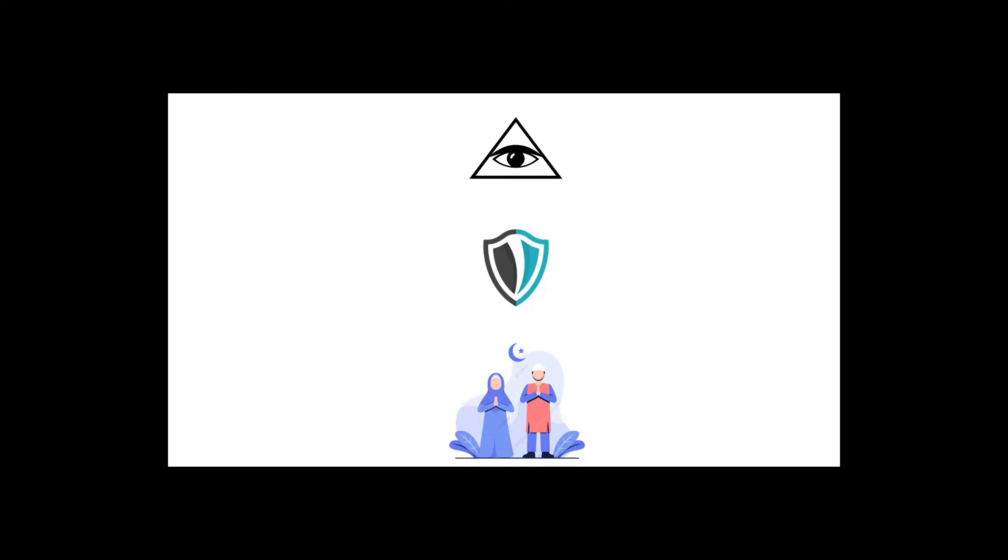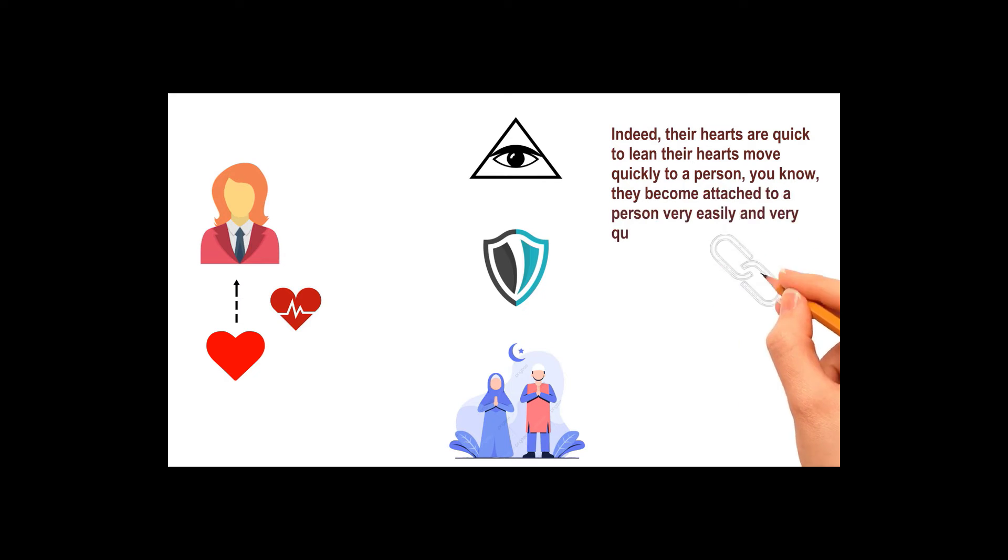The third issue is the easiness with which the hearts of the women are attached to emotional issues. I think one of the Arabic poets, he said that indeed their hearts are quick to lean. Their hearts move quickly to a person. They become attached to a person very easily and very quickly.